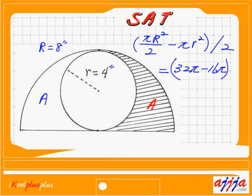Then divide by 2, which is 32π minus 16π, which is 16π. Divided by 2, divided by 2 again. Finally, 8π. So 8π square inches.